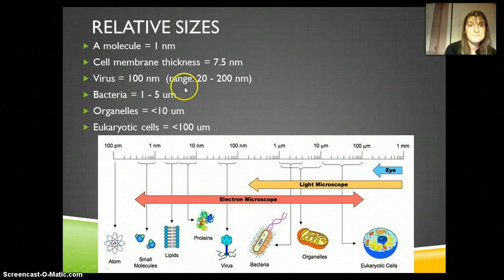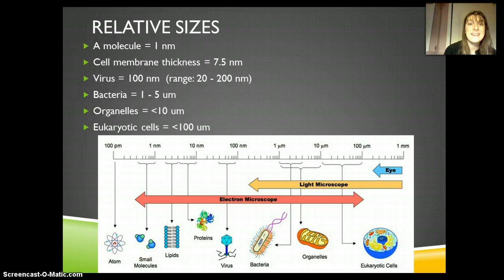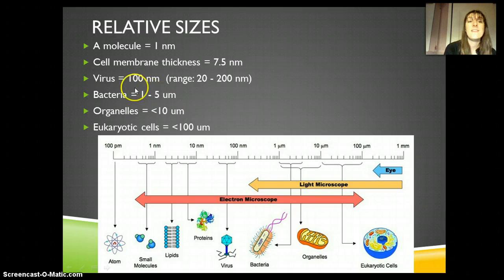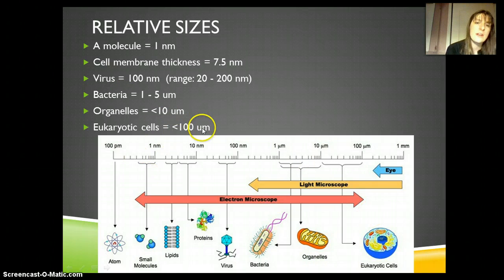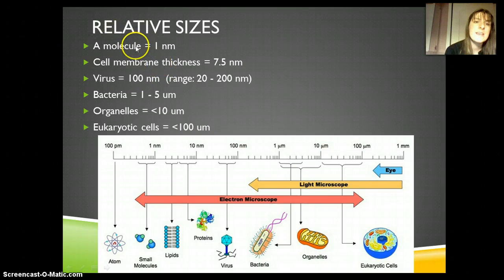Viruses are a little bit larger — somewhere between 100 nanometers up to about 200 nanometers on average. Viruses are small because basically all they are is protein and DNA. Bacteria are actually cells — prokaryotic cells — and they're between 1 and 5 micrometers. Bacteria are normally smaller than the parts of our eukaryotic cells, and those parts are the organelles, which are about 10-ish micrometers. Eukaryotic cells are generally greater than 100 micrometers. Within each of these there's definitely a range, but we can put things in order from smallest to largest.